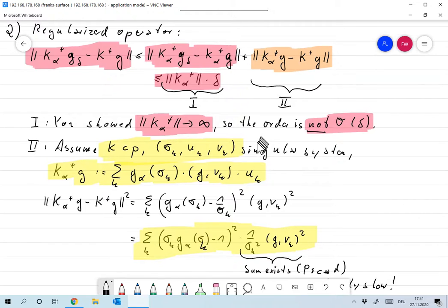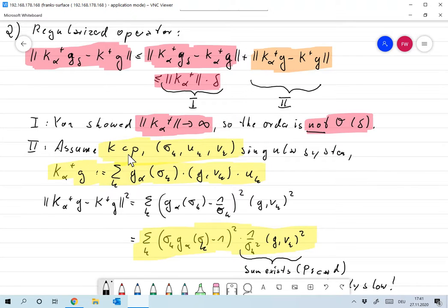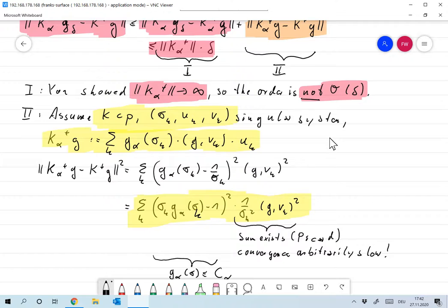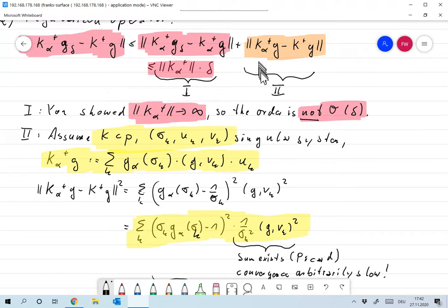Now, to discuss this a little bit more, let's assume that K is compact at this point, sigma K, UK, VK, the singular system. And let's look at the special regularization scheme: sum over K, G alpha of sigma K times scalar product of G and VK times UK. Okay, that's the blueprint for singular value based regularizations that we've used several times now.